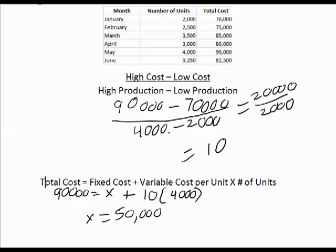So if we produce zero units, our total cost will be $50,000. If we produce one unit, we would have $50,000 plus 10 times one unit. So we would have $50,000 and $10.